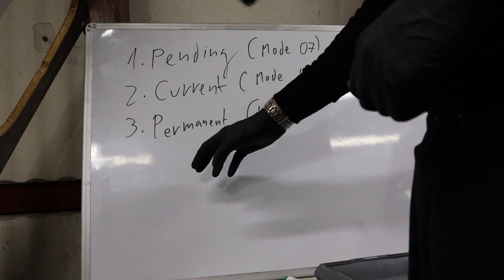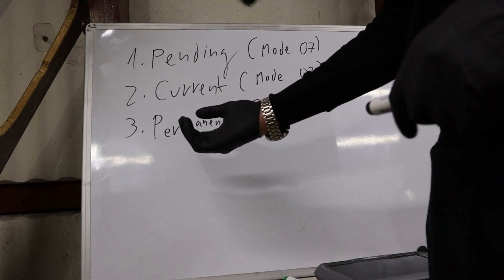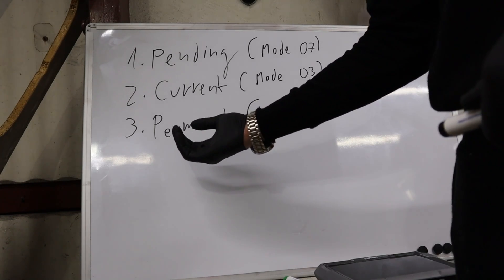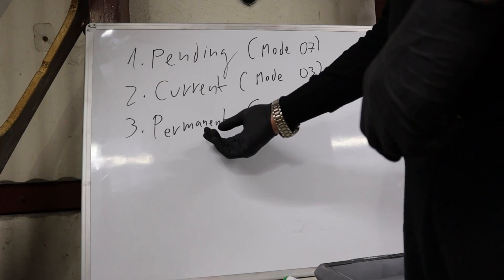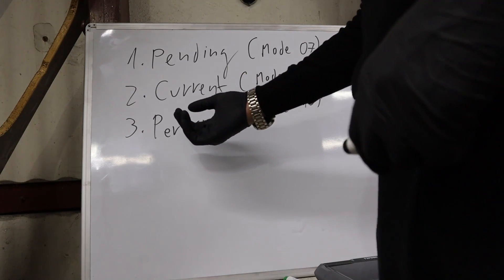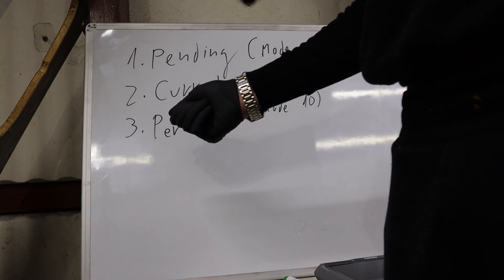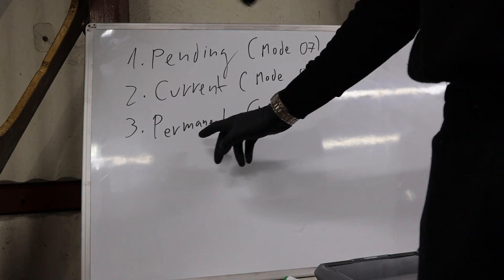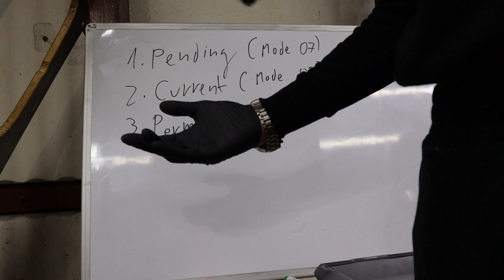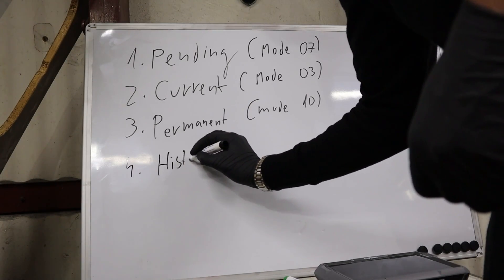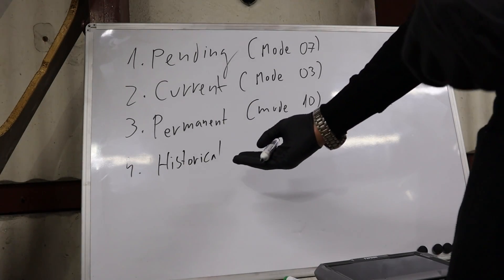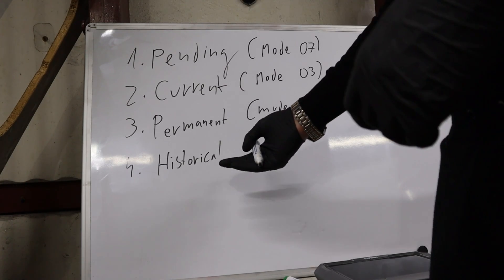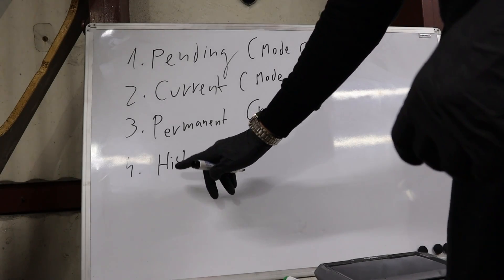Permanent codes are codes that you simply cannot erase with your OBD scanner. Mostly, when you get some broken wiring and your control module doesn't get any voltage, that will set a permanent fault. For example, for my intake air temperature sensor or mass airflow sensor — if I unplug this sensor and there is no voltage, no response coming from the sensor, then it will be a permanent fault which I simply cannot erase unless I fix the issue first.